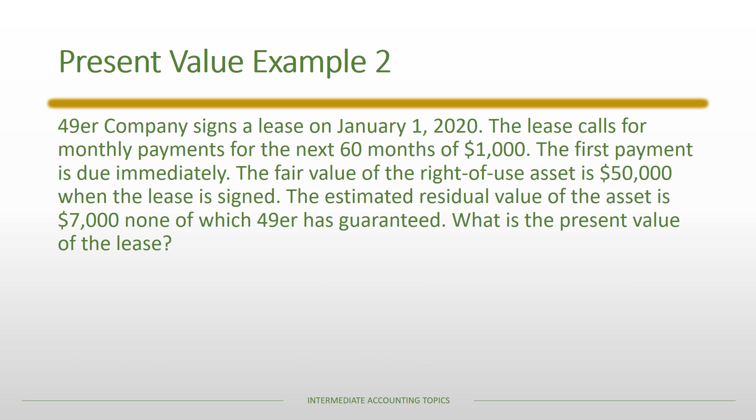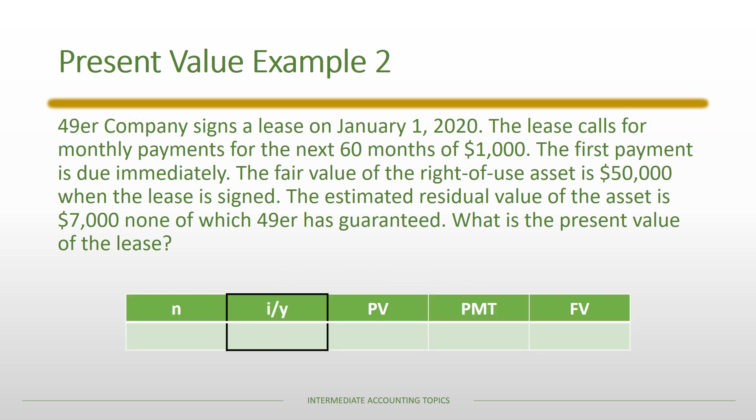Now we'll do a second example with new information. Notice it uses monthly payments rather than semi-annual payments. For the first step, calculating the implicit rate, we use the TVM framework. The key difference here is that the first payment is due immediately, so you must set your calculator to understand you are making beginning-of-period payments. If you're unsure how to do this, your user's manual or a professor can help you reset your calculator.